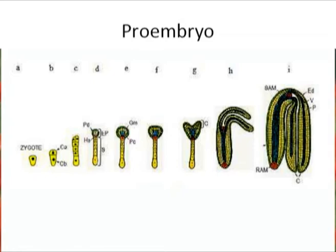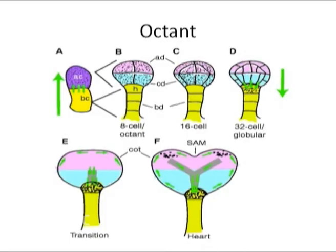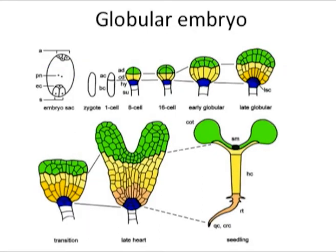The basal cell divides several times to form the suspensor; the lowermost cell of the suspensor is called the hypophysis. The two terminal cells divide to form four cells and later eight cells — the octant stage. At the octant stage, the four cells below the suspensor are called hypobasal cells and the remaining four are epibasal cells. The hypobasal cells develop into hypocotyl and radicle, while the epibasal cells develop into plumule and cotyledons. At this stage the embryo is globular in shape, and the suspensor shows maximum growth, pushing the embryo cells into the endosperm.